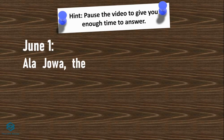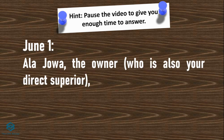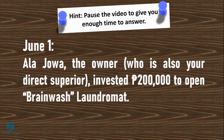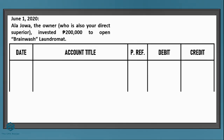On June 1, the business owner invested 200,000 pesos to open Brainwash Laundromat. Let's do the entry. First, since the transaction date is already given, let's plot June 1 under the date column. Next, we received cash and therefore cash should increase. To increase assets, we debit the account — so we debit cash.